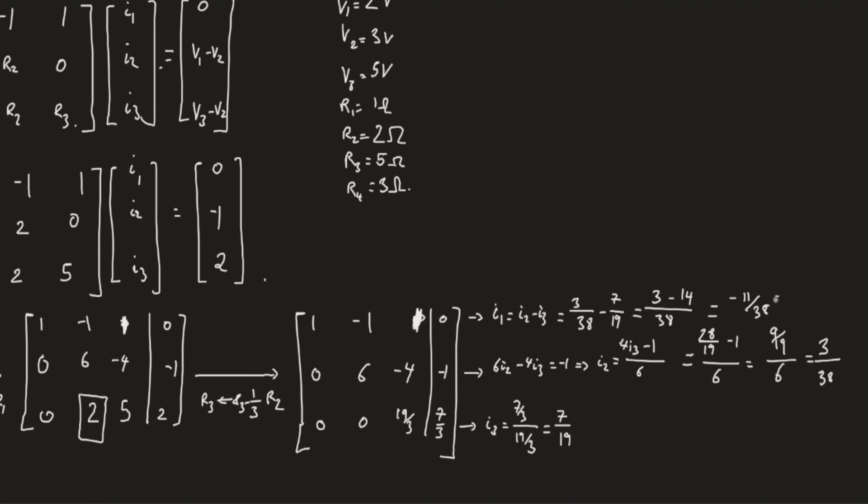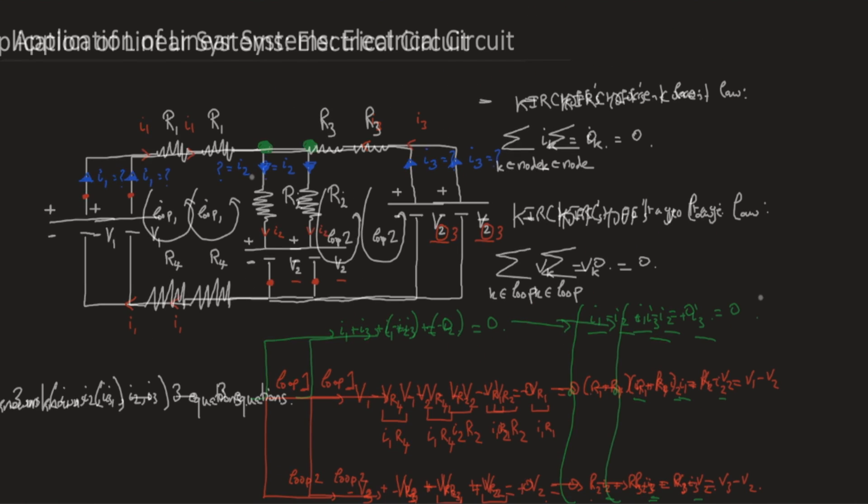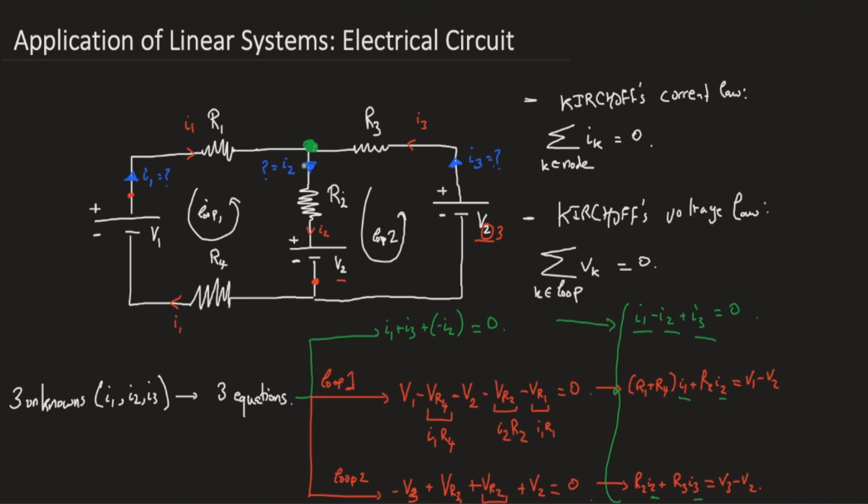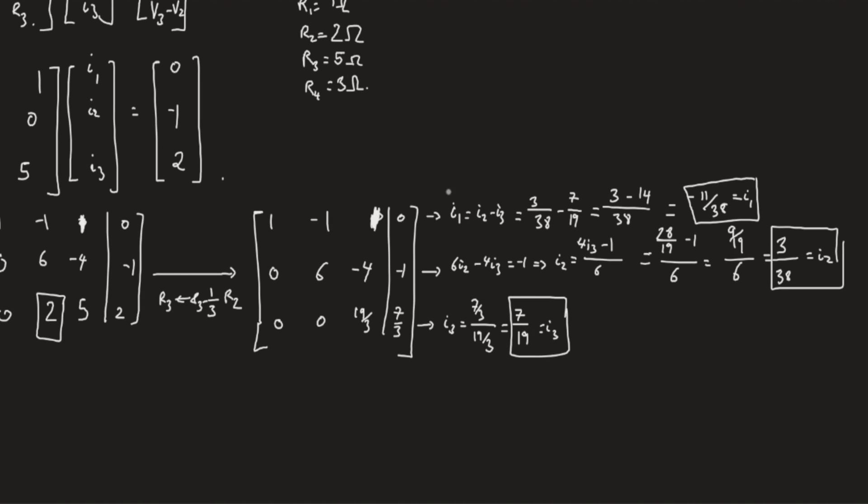So the solutions are here: this guy is I1, this is I2, and here is I3. Just one comment on electrical circuits. I2 and I3 are positive, and I1 is negative. What does that mean? Going back to the circuit, I2 and I3 being positive means that their sense, as is on the figure, is correct. I2 moves from the green dot downwards, and I3 moves upwards as shown. Since I1 is negative, then we should invert its sense. So it is not moving upward, we say it moves downwards, with a magnitude, of course, of the one we derived, 11 over 38.